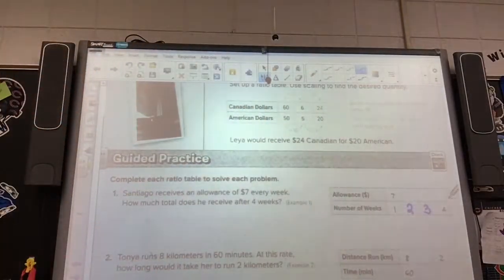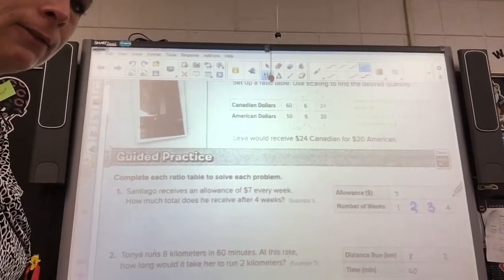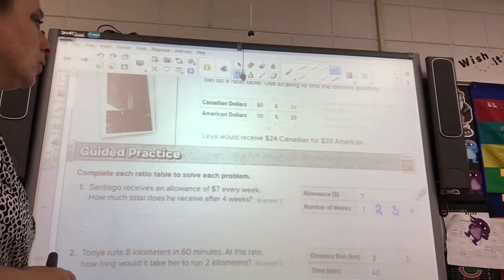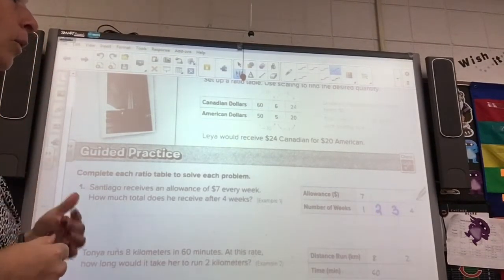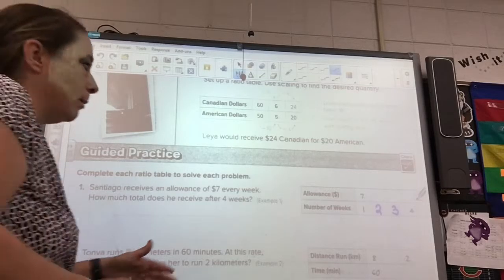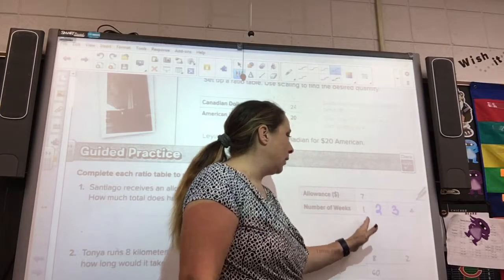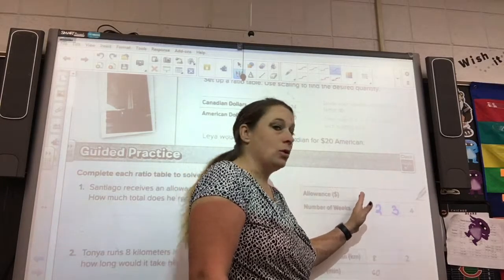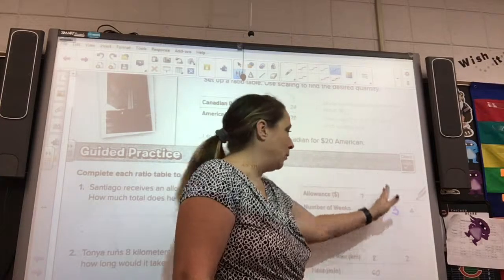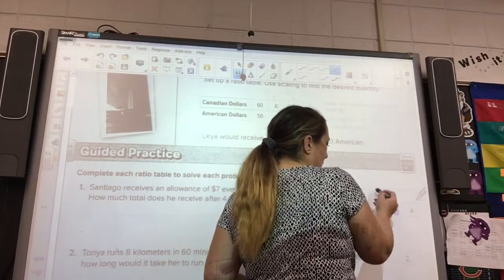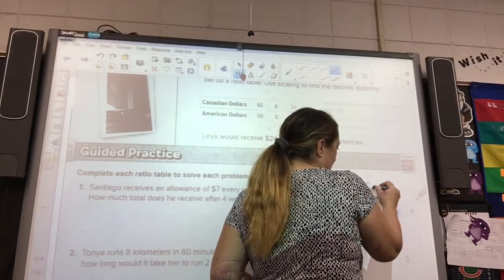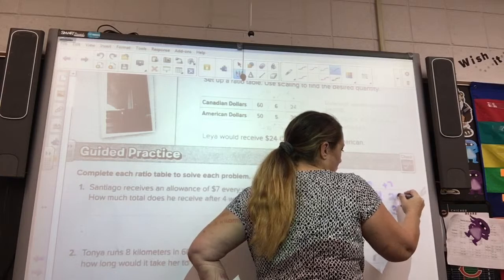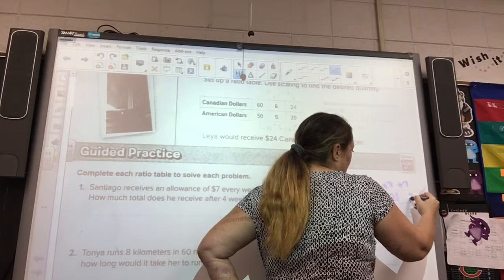All right. So, if the number of weeks goes up every week by the same, so week 1, then we add 1 and get 2, we add 1 and get 3, we add 1 and get 4. Logically, we have to do the same on 7. So we have 7, we add 7 more, and we get what? 7 and 7 is 14 plus 7, 21 plus 7, 28.